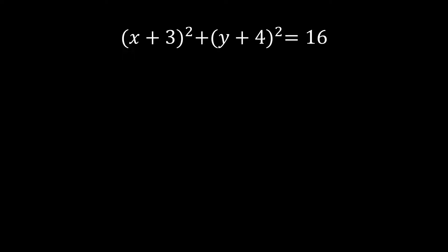Let's now try our second problem. If you want, you can pause the video and resume once you have the answer. Let's expand the first binomial: (x plus 3) squared. We do the special product — square the first term: x squared. Next, multiply the two terms: x times 3 is 3x, times 2 gives plus 6x. Then we square the last term: 3 squared is 9.